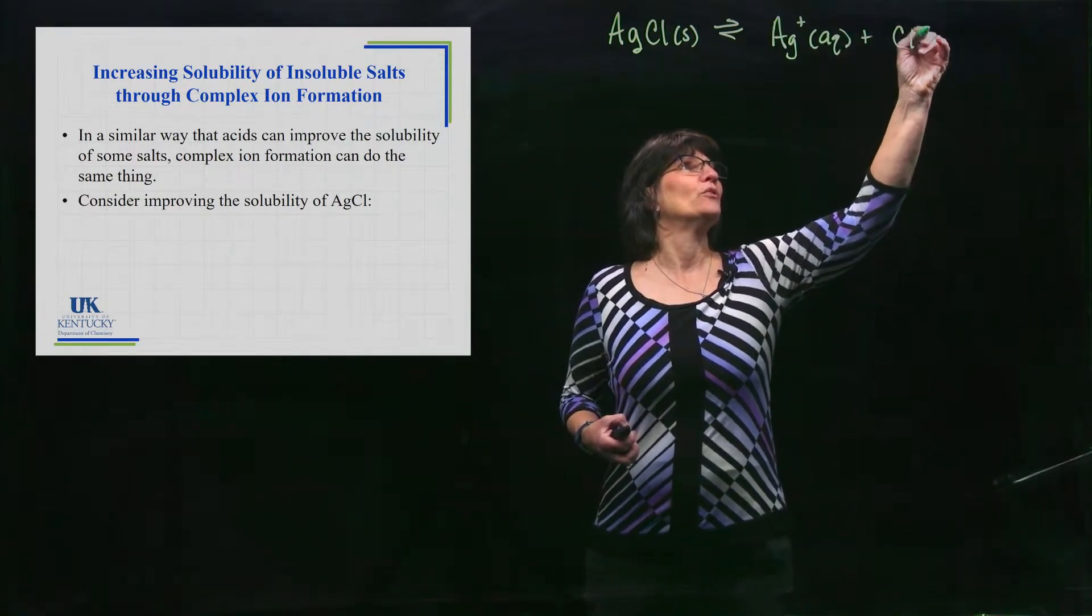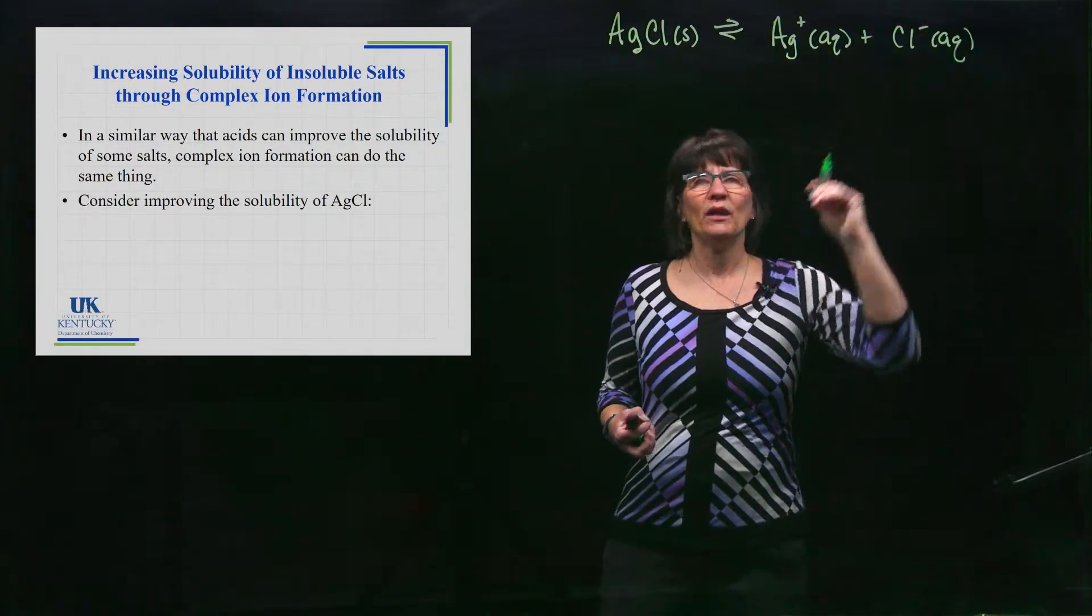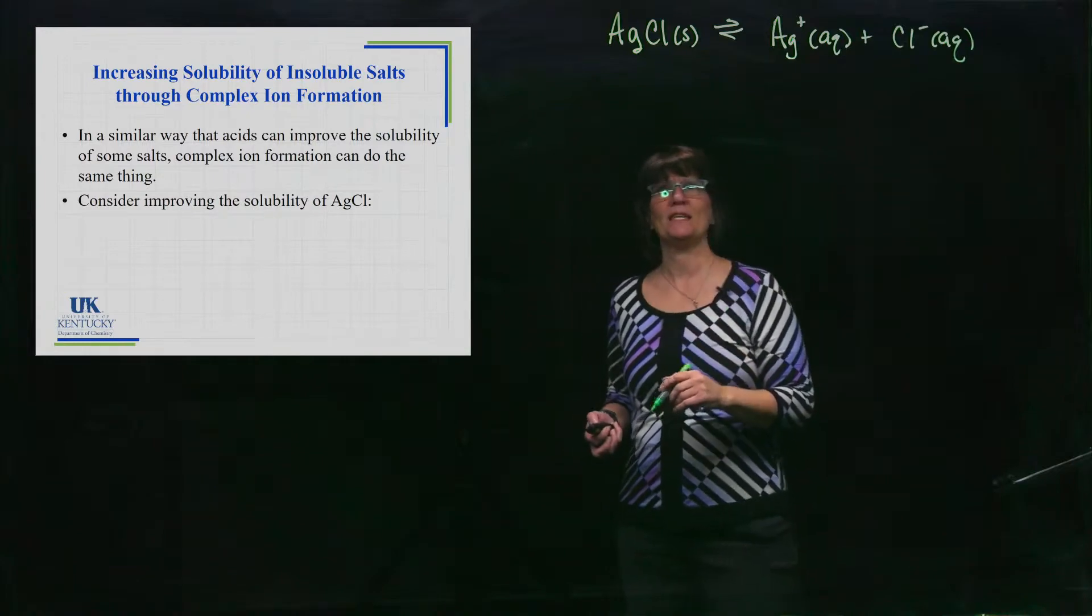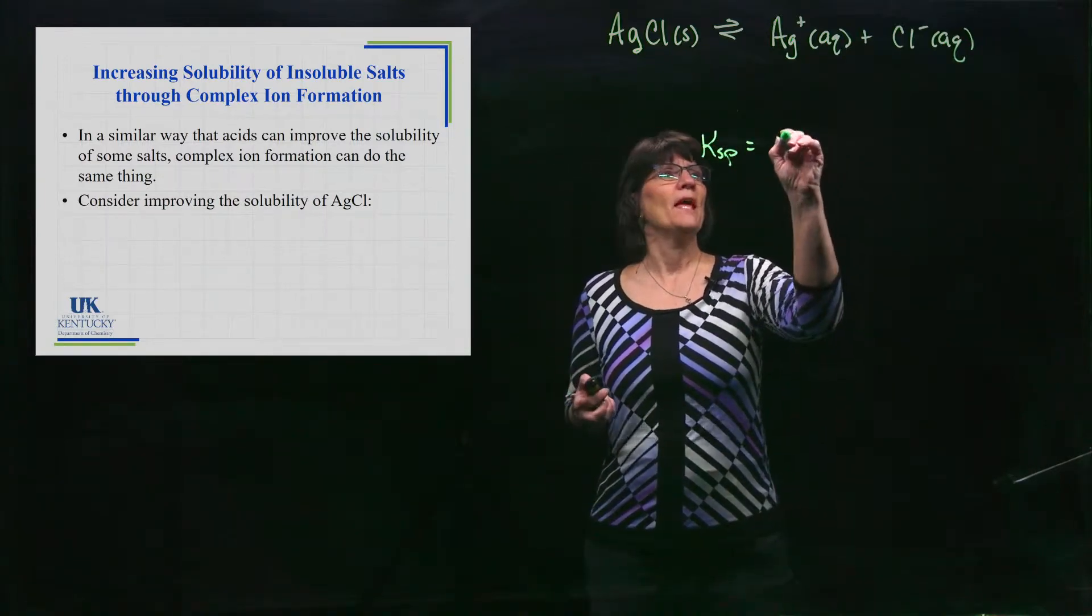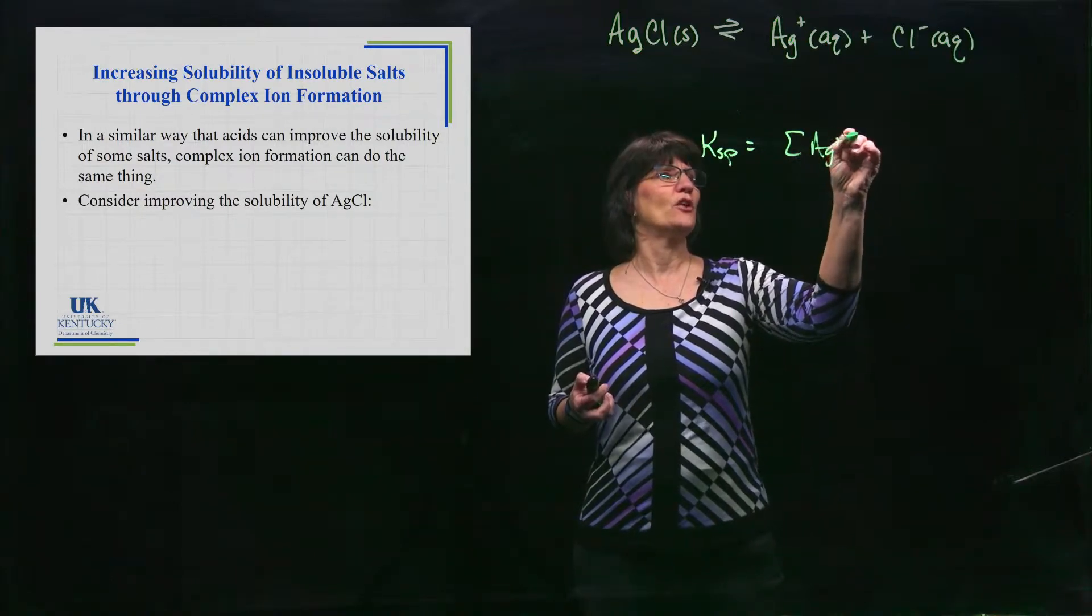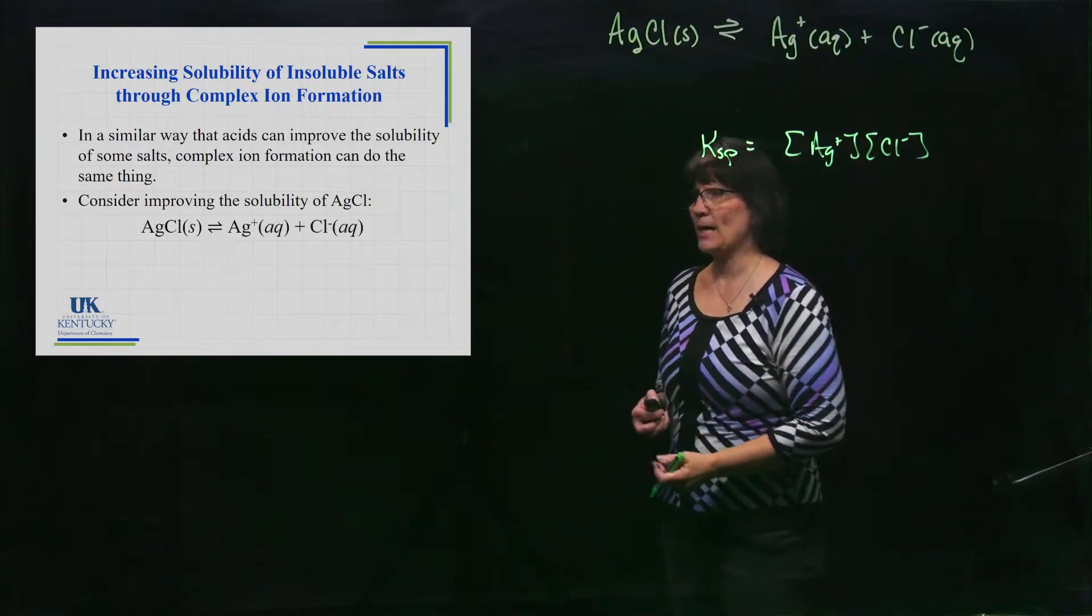According to our solubility rules, it's an insoluble salt and we can have a value of Ksp, which would be a very small number. It would be equal to the silver ion concentration times the chloride ion concentration.